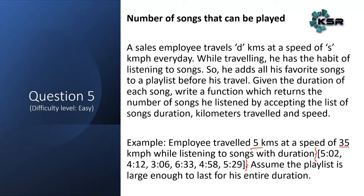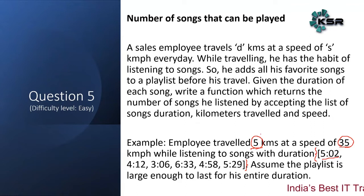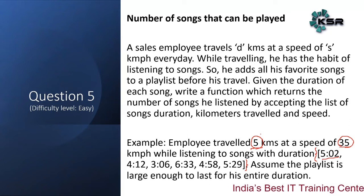We are given: the total distance the user traveled, at what speed the user is traveling, and the duration of each song in the playlist as a list. Given these three inputs, we need to return the number of songs he listens to. Try it on your own and then come back to view my solution — pause the video now.